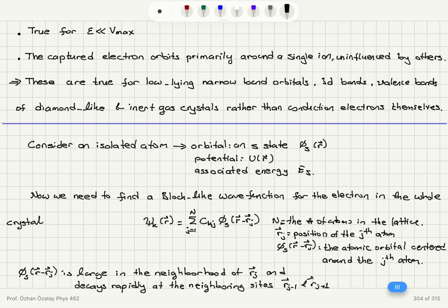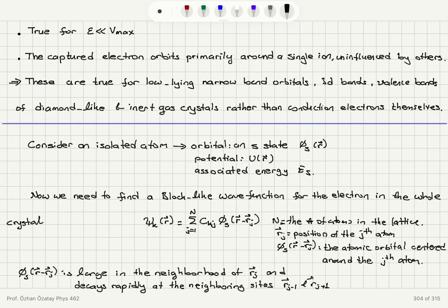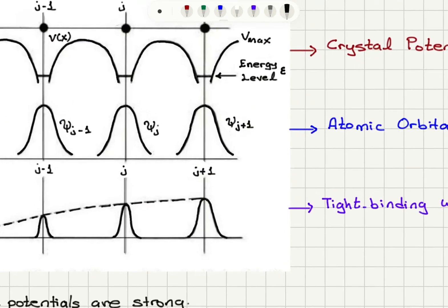Now this wave function phi s of r minus rj is at r equals to rj quite large in the neighborhood of rj and that decays rapidly at the neighboring sides rj minus 1 and rj plus 1 as you can see here.